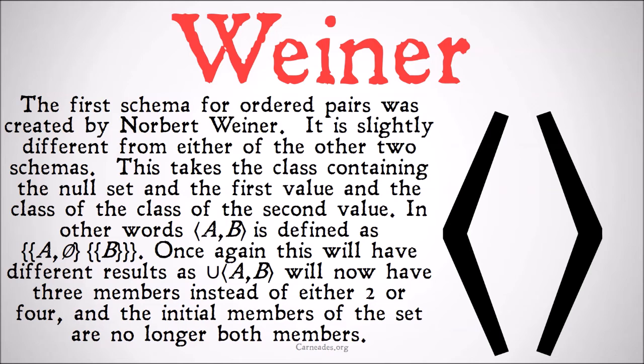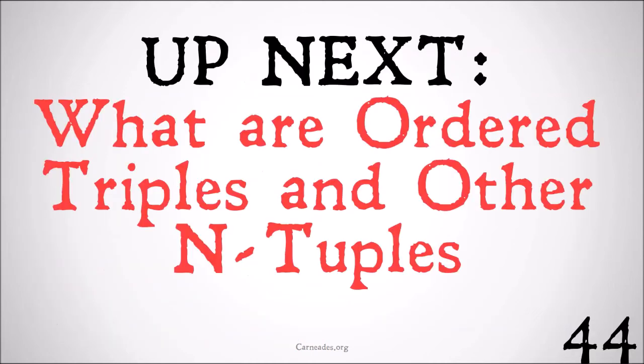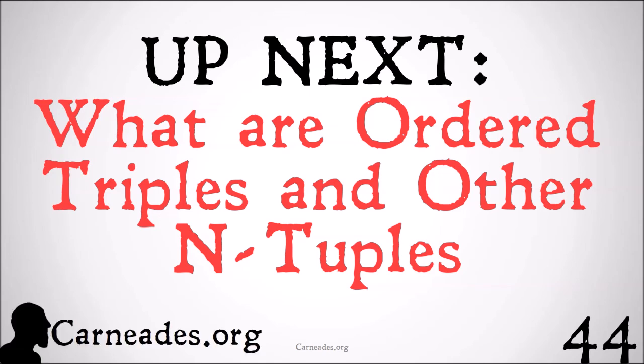There are many more acceptable schemas for ordered pairs that you could come up with. We're going to work with the one we outlined initially, but be careful as you're looking through things, because they may define ordered pairs differently. Up next: what are ordered triples, quadruples, and other n-tuples? Watch this video and more here at carneades.org. Subscribe and hit that notification bell if you like this content and want to see more, and as always, stay skeptical everybody.